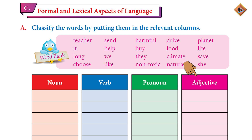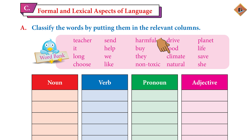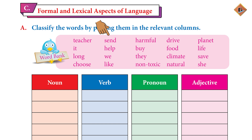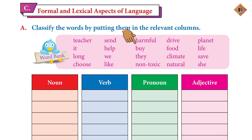Let's start with the first column. What will be the nouns? Teacher, planet, food, life. What will come in the verb column? Send, drive, help, buy, save, choose, like.